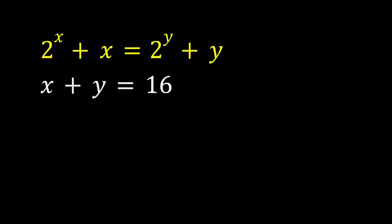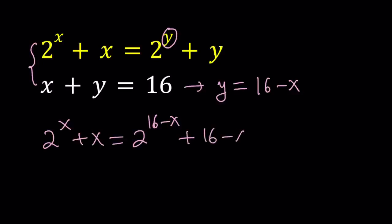And let's just start with something that wouldn't work. Why do I show you that? Because sometimes you need to see methods that don't work. So, let's go ahead and isolate y from the second equation. And we get y equals 16 minus x. Let's go ahead and replace the y with that in the first equation. That gives us 2 to the power x plus x equals 2 to the power 16 minus x plus 16 minus x. Now, it would definitely be nice if x is canceled out and we ended up with an exponential equation, but unfortunately that's not the case.